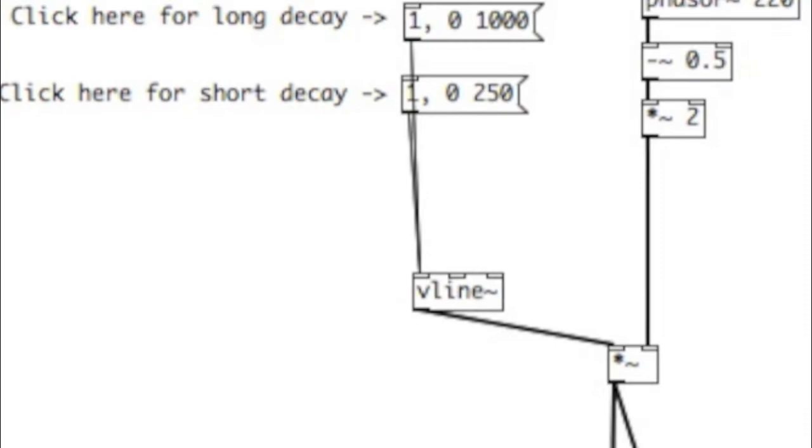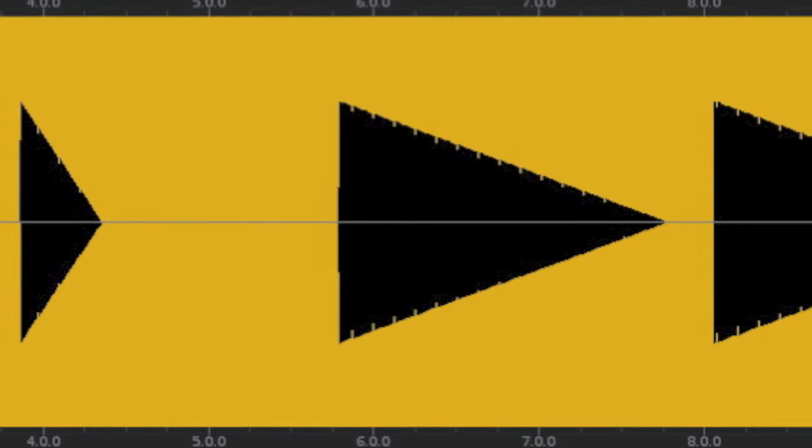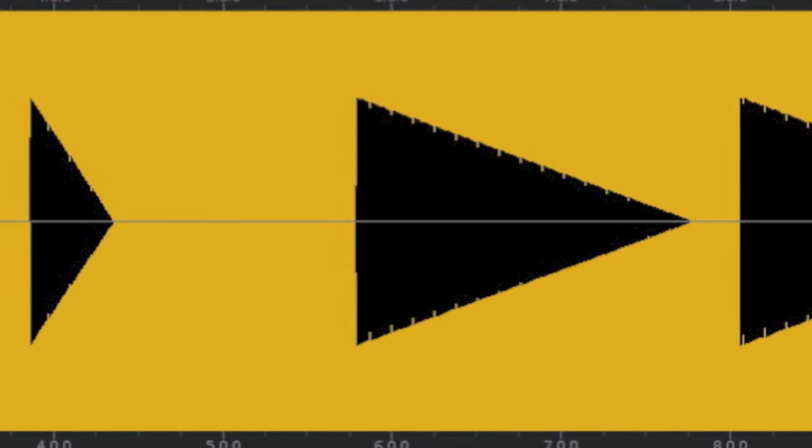For example, let's listen to this saw wave here. You'll notice that although the decay starts out okay, once it gets quiet it just drops off the face of the earth.